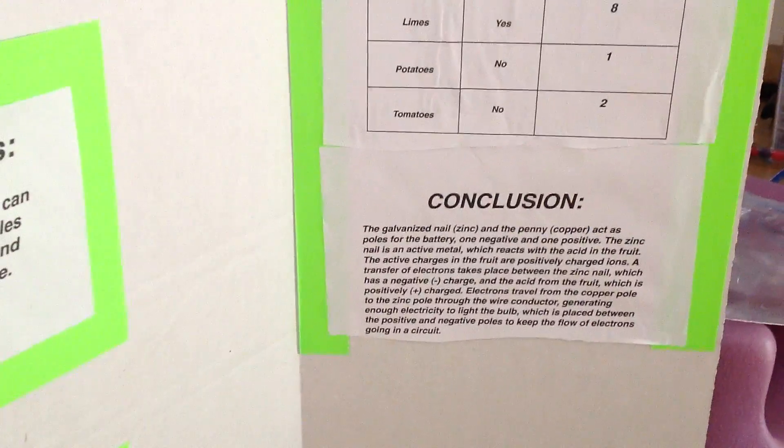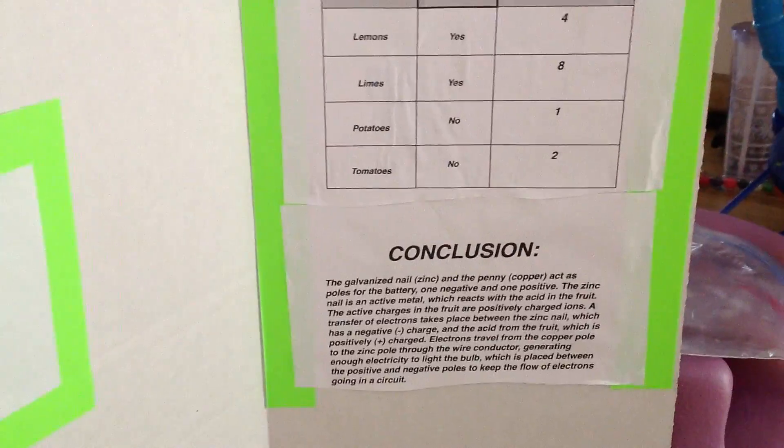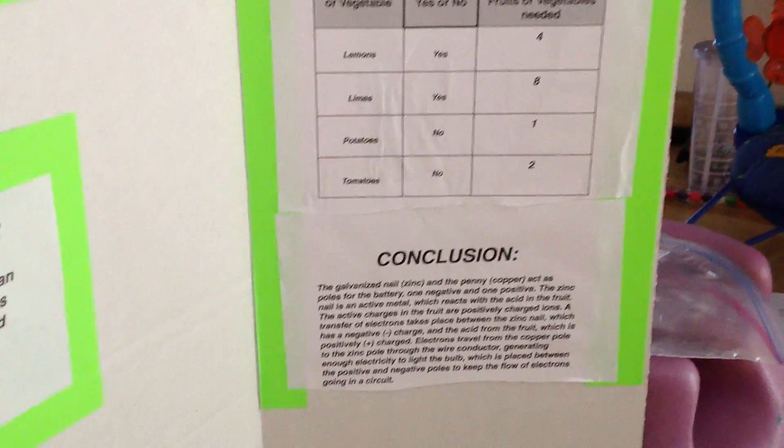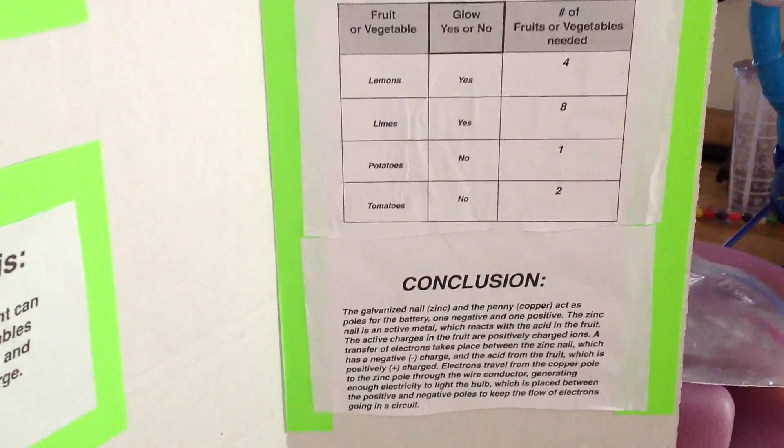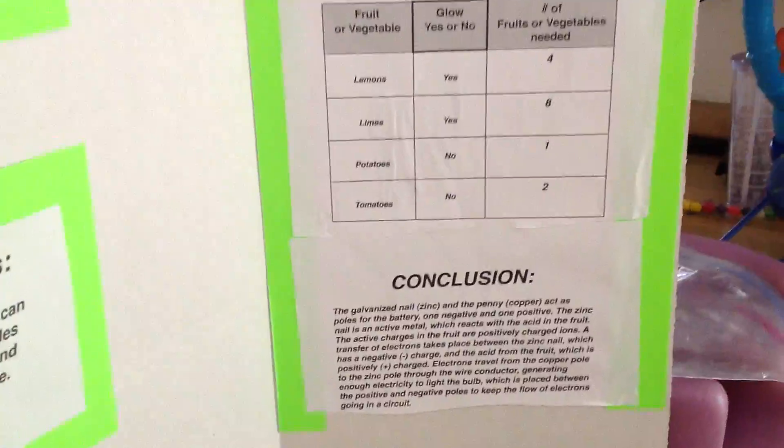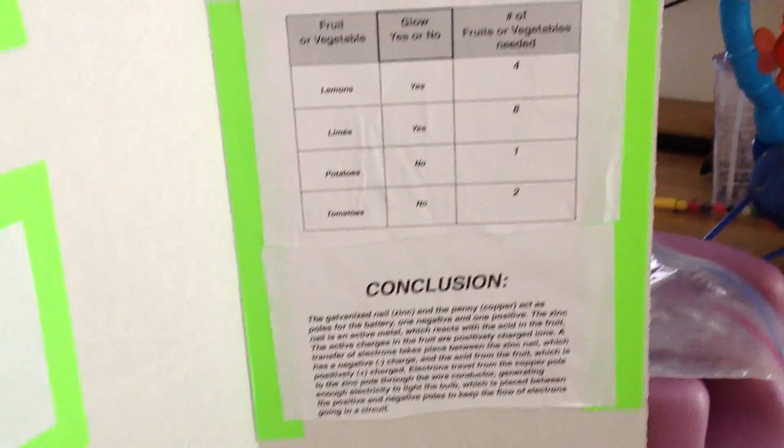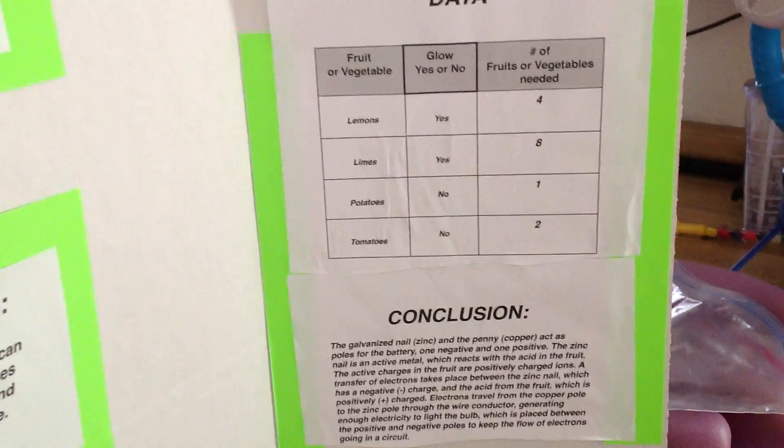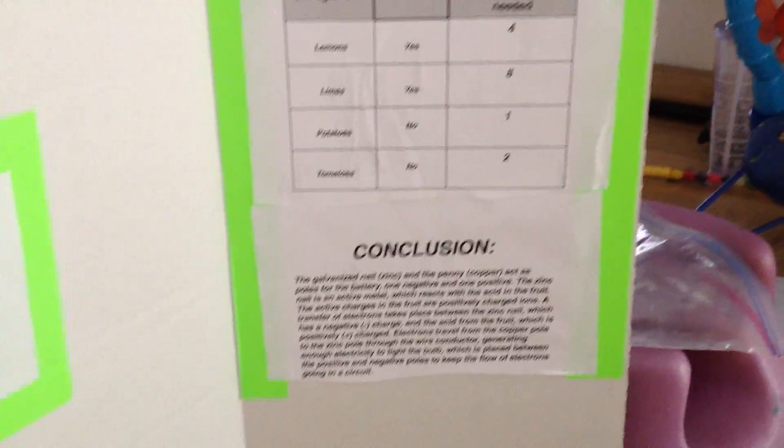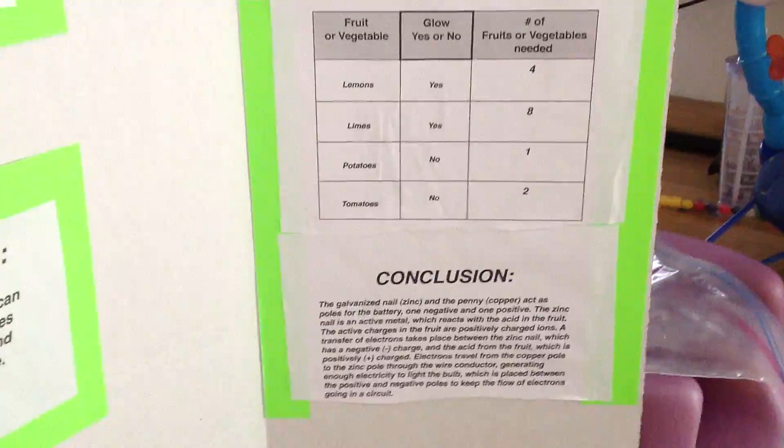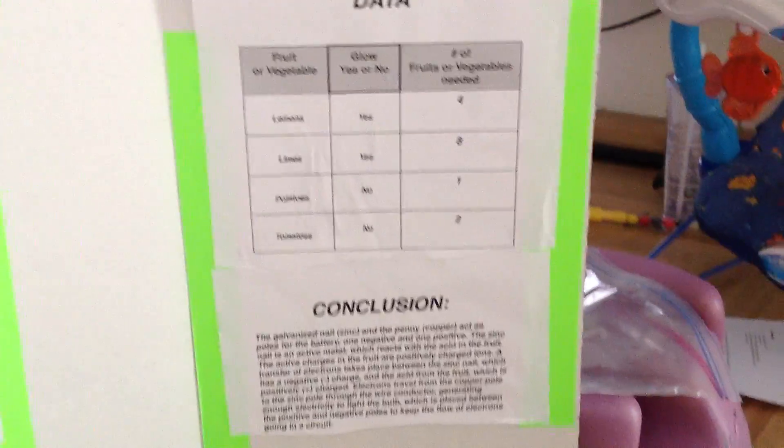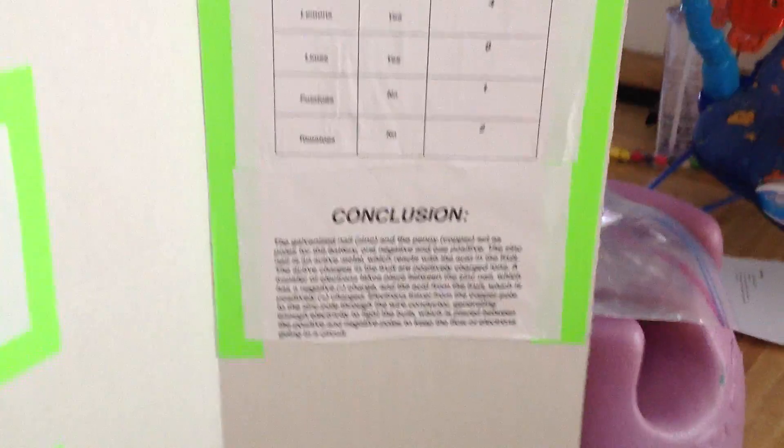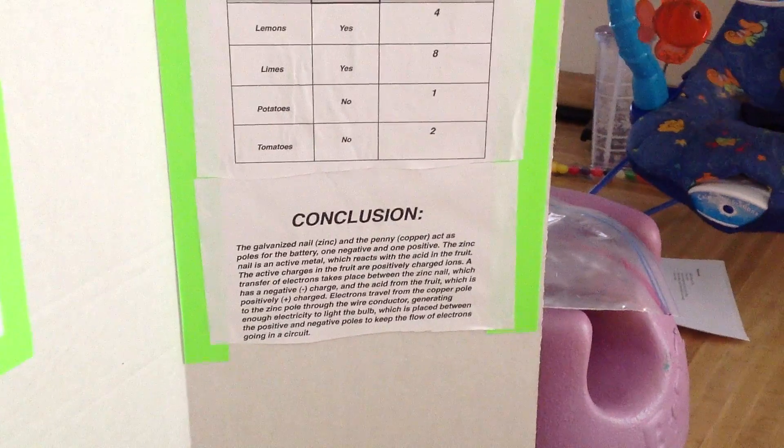The active charges to the fruit are positively charged ions. A transfer of electrons takes place between the zinc nail, which has a negative charge, and the acid in the fruit, which is positively charged. Electrons travel from the copper pole to the zinc pole through the wire conductor, generating enough electricity to light the bulb, which is placed between the positive and the negative poles to keep the flow of electrons going in a circuit.